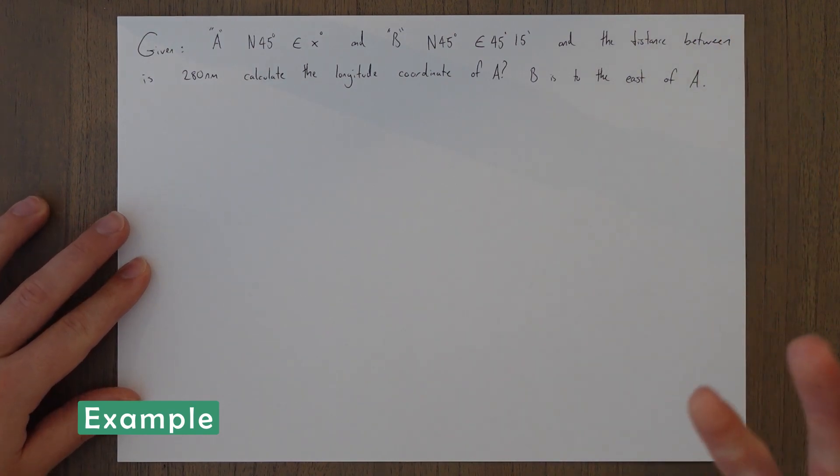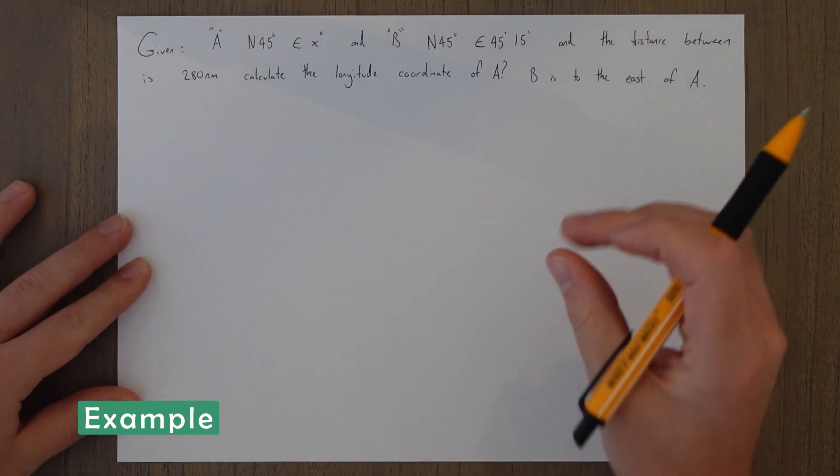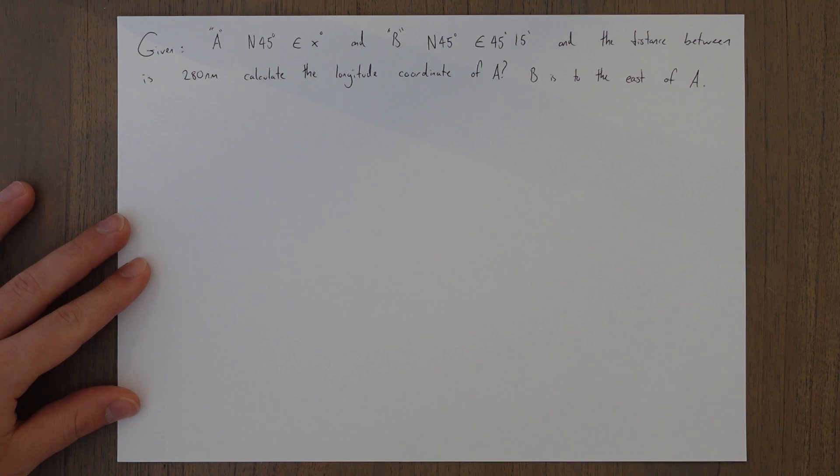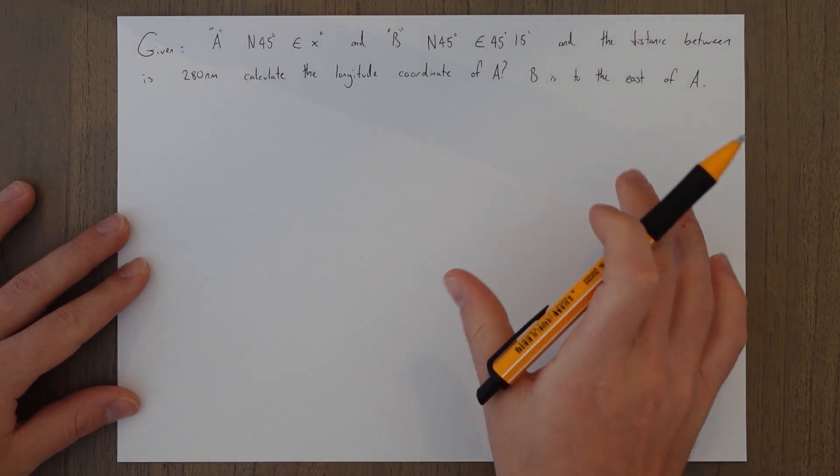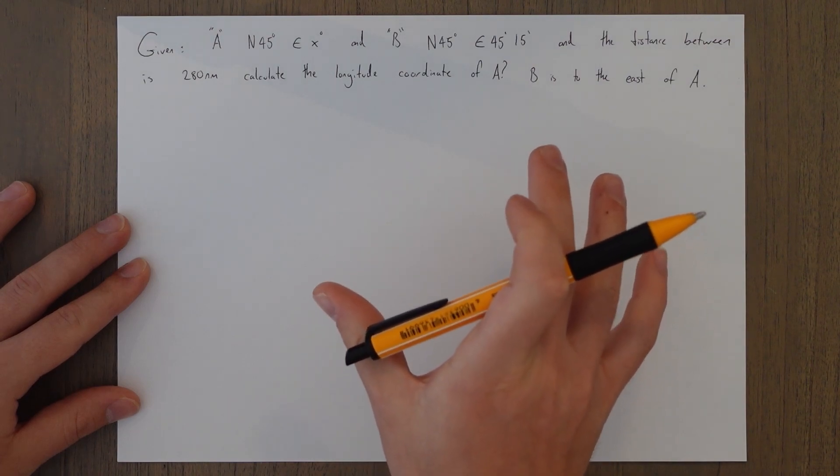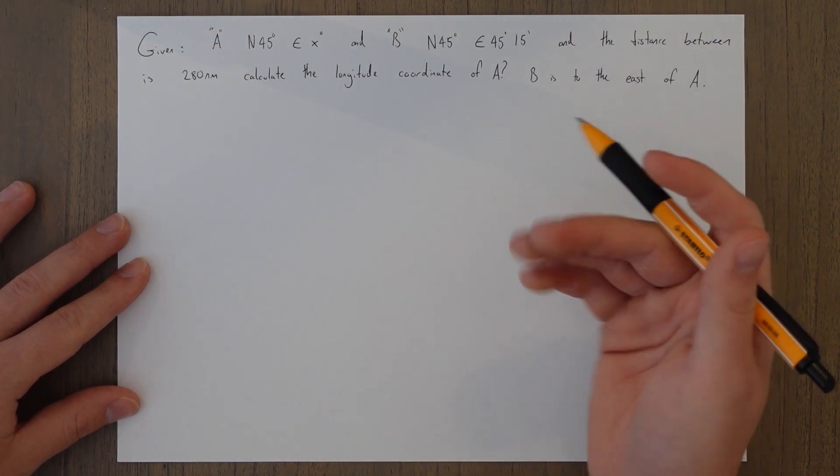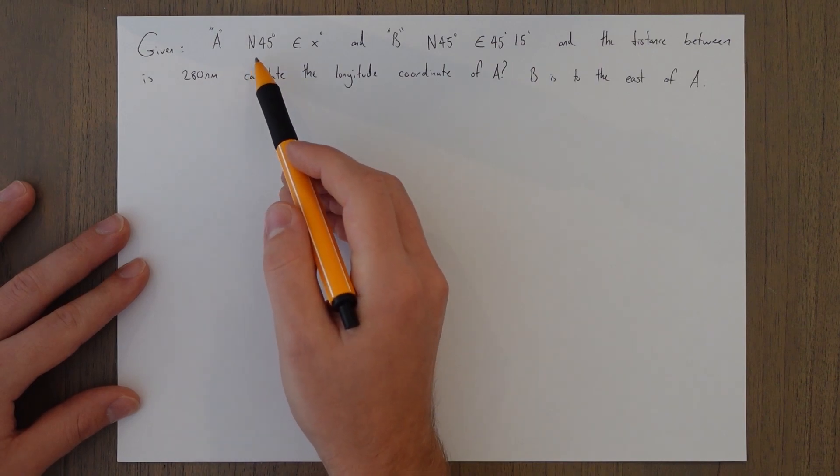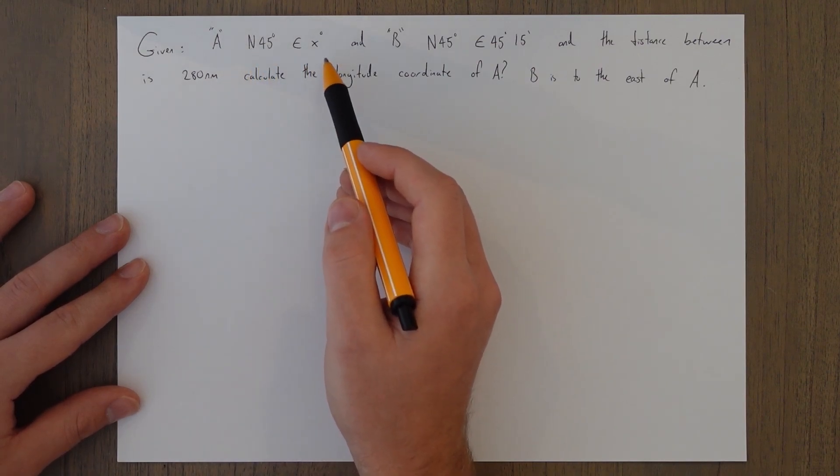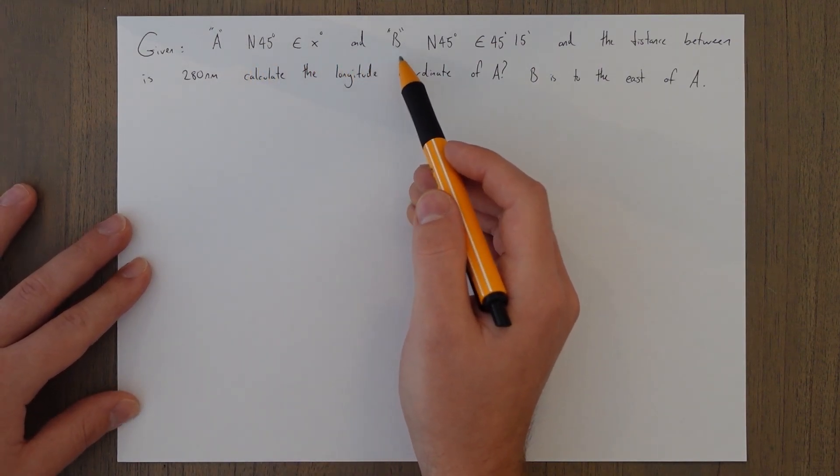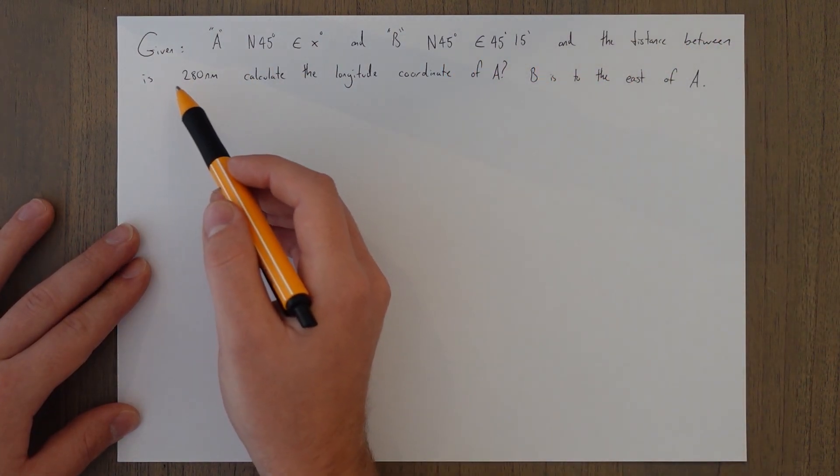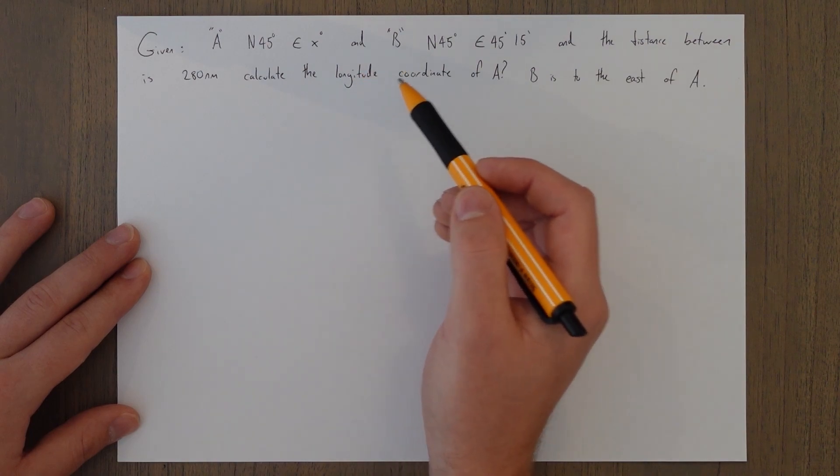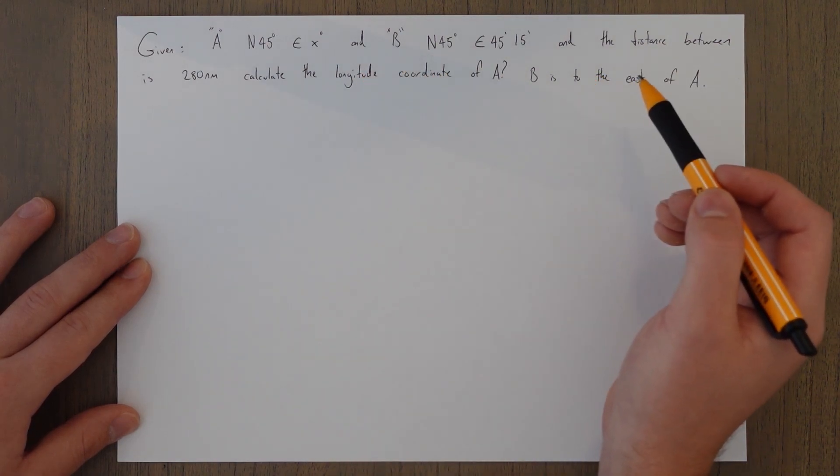So a good way to explain how we use this proportion change is with an example. I've taken this one directly from the question bank, and it's slightly different from just finding out the difference, but it's very accurate, something you might see. So we have this, we have given point A, which is north 45 east some longitude, and B north 45 east 4515, and the distance between them is 280 nautical miles. Calculate the longitude coordinate of A, B is to the east of A.